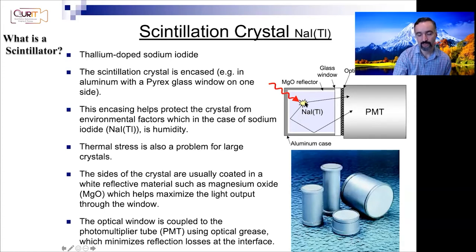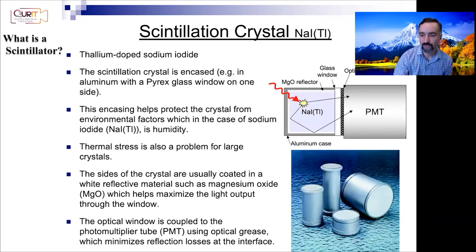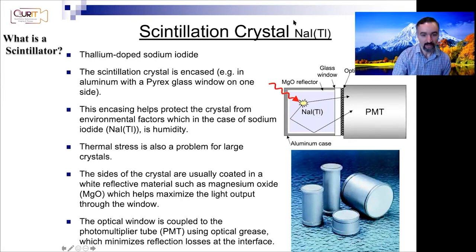The idea is that as scintillation photons are generated, you really want them all to move in one direction and end up being detected in the PMT — the photomultiplier tube — which will amplify the signal and convert it from light to an electrical signal for our system to process. This reflective material helps guide the generated photons in that direction. The optical window here is coupled to the photomultiplier tube using optical grease.